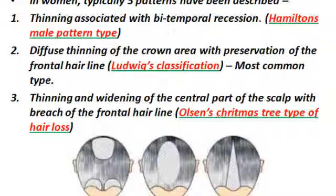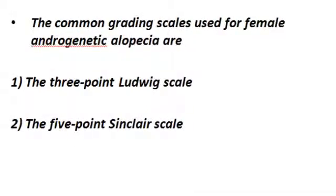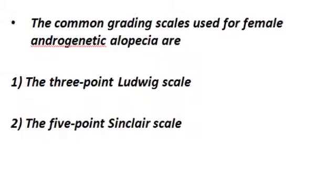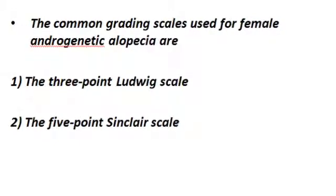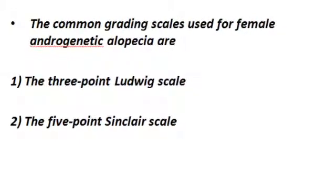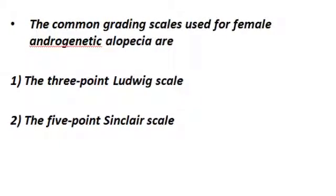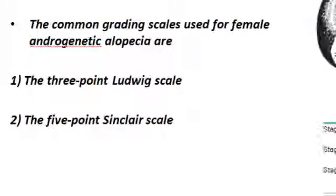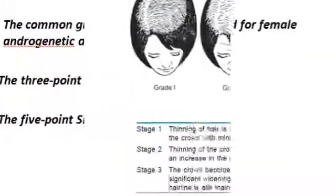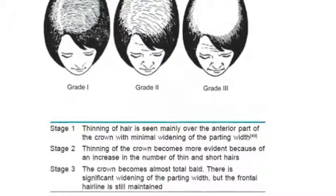For grading the severity of female pattern alopecia, we have two systems: first, the three-point Ludwig scale, and second, the five-point Sinclair scale.